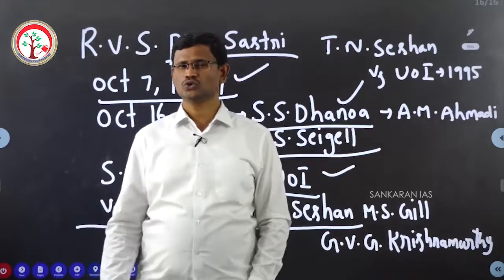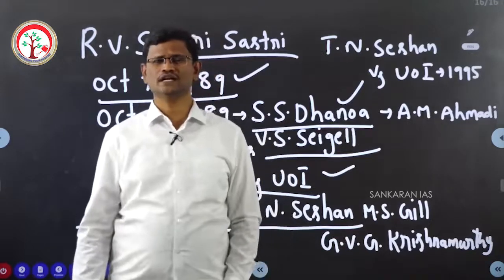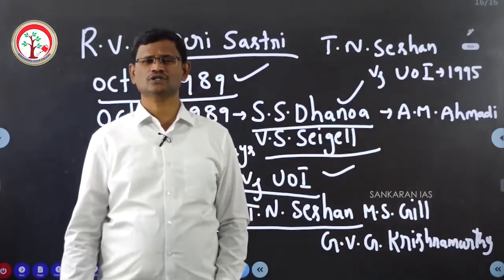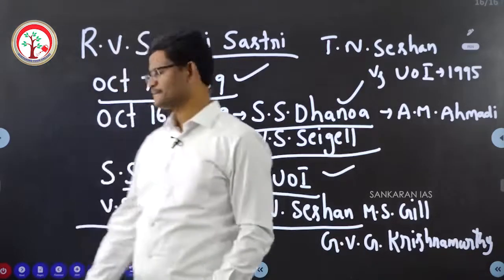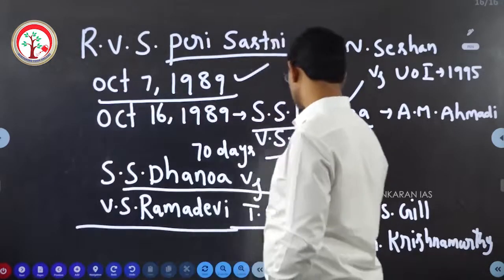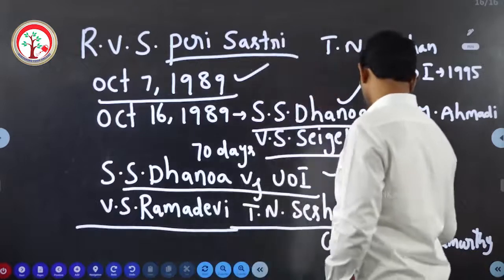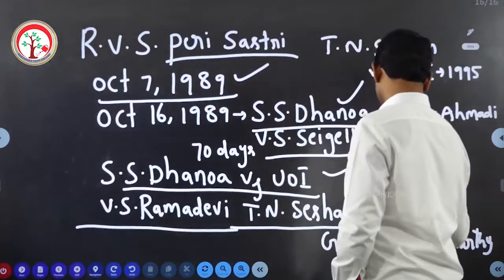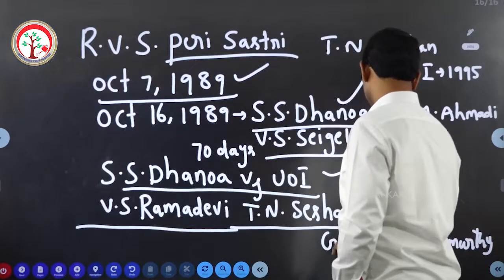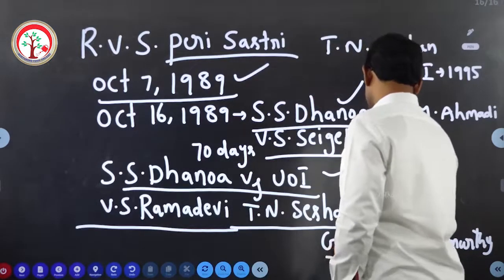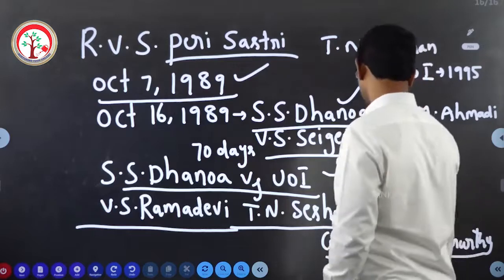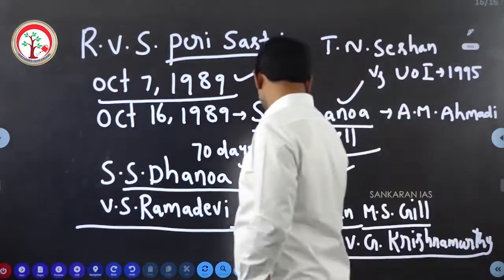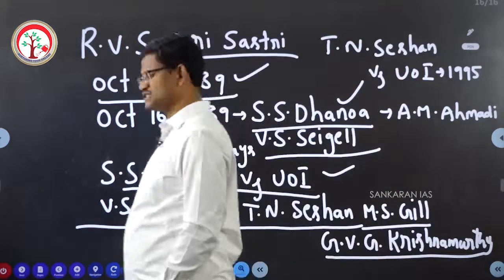The two new Central Election Commissioners who were appointed at this time were M.S. Gill and G.V.G. Krishnamurthy.